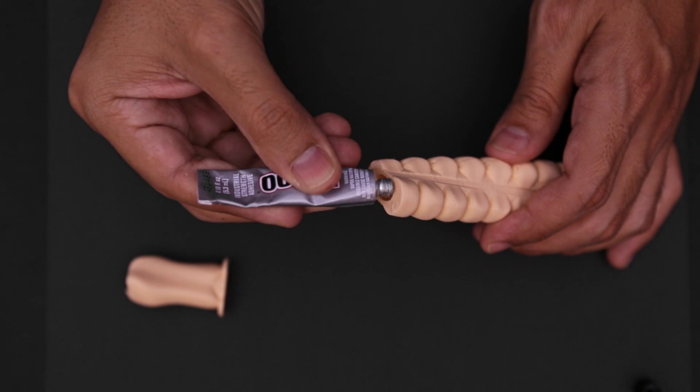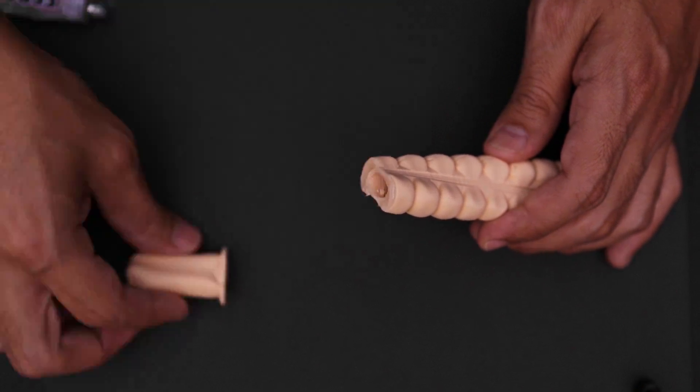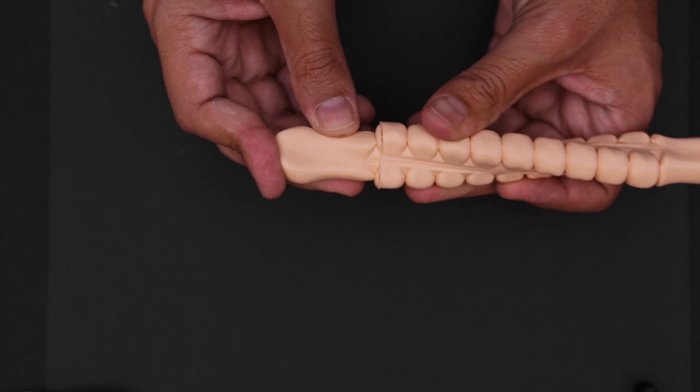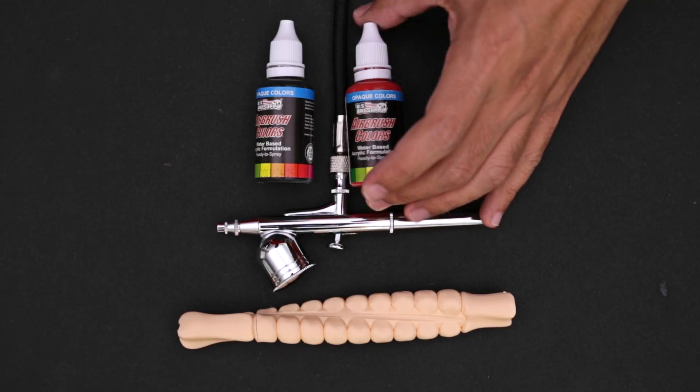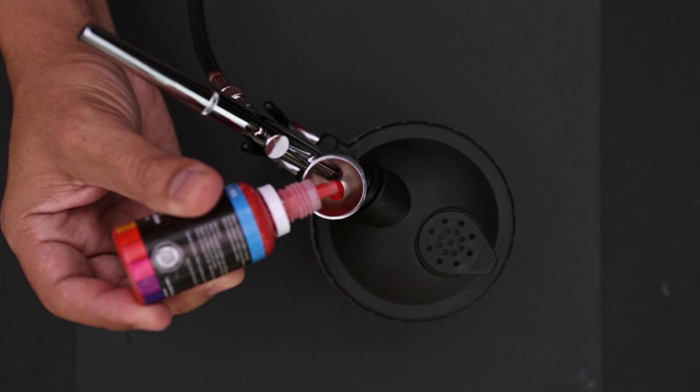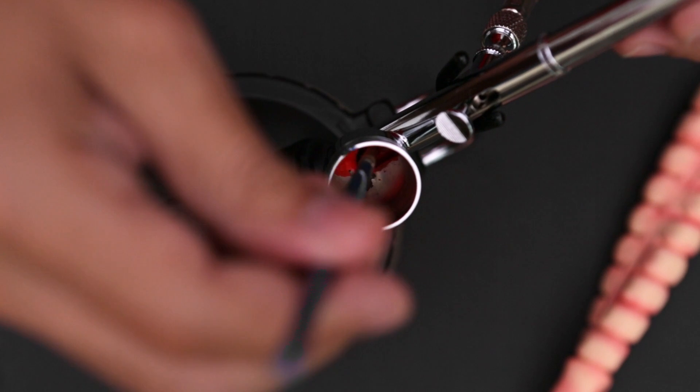E6000 adhesive will permanently bond these pieces together while maintaining the material's flexibility. Just make sure to give them several hours to fully cure. This water based acrylic paint holds onto Ninjaflex really well, so there's no sanding or primer coats necessary. A mix of red and black gives us that bloody tone that works well for this project.